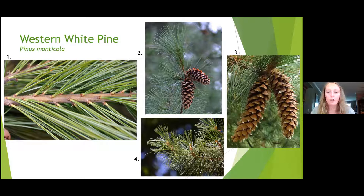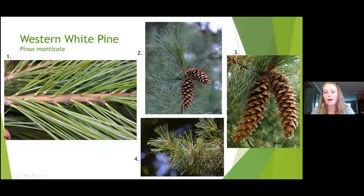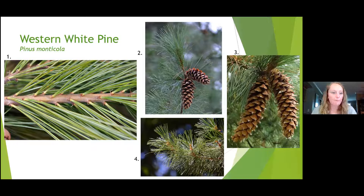The cones of western white pine are really nice — long and slender. They have a lot of pitch on them, as you can see in photo number three with pitch dripping off each scale. I wouldn't say that's a particularly good ID feature, but it's just interesting. So if you see a really big, long, slender cone with a lot of pitch on it, it's probably from a white pine — a good way to see if there's one in the area.